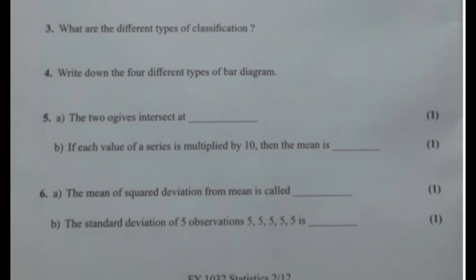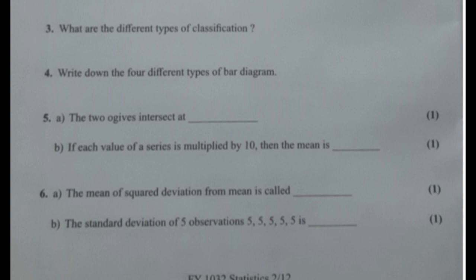Classification based on place like continents, country, state, district, village, etc. is called geographical classification. To summarize, the four types of classification are: qualitative classification, quantitative classification, geographical classification, and chronological classification.